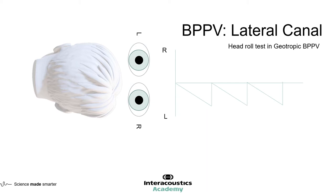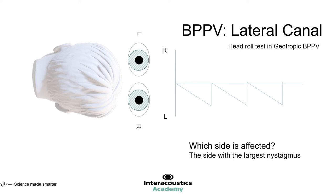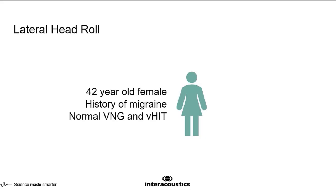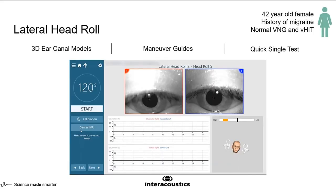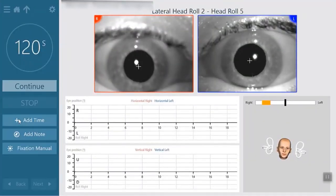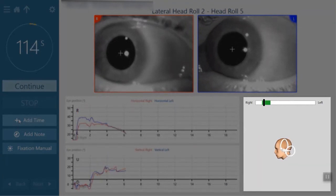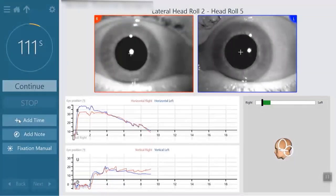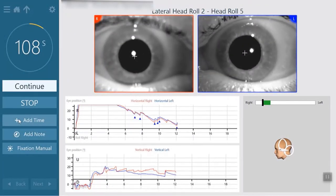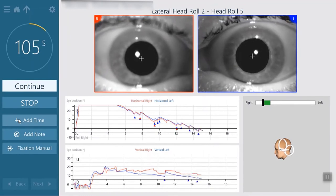The second question is: which ear is affected? The affected ear is the side which has the largest nystagmus. We'll now watch a video showing an example of lateral canal BPPV, and you can make a guess at which ear is affected. In this video, the patient turns their head to the right while laying supine. The bar indicator turns from orange to green, confirming the head is in the correct direction.